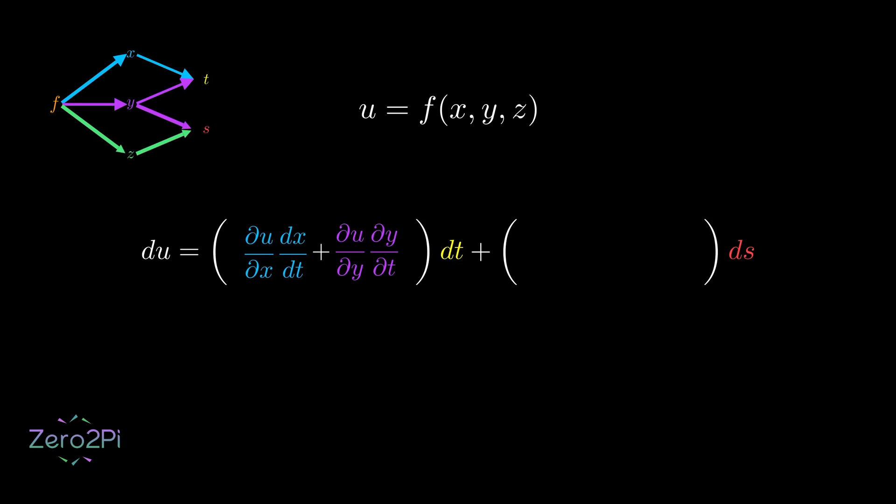why have I written the partial derivative of x with respect to t instead of dx/dt when x only depends on t? This is because they both mean the same thing, since there is only one input variable. In other words, we can say that an ordinary derivative is just a special case of a partial derivative used when there is only one variable involved. So, this is just to keep the notation consistent here. But for y,